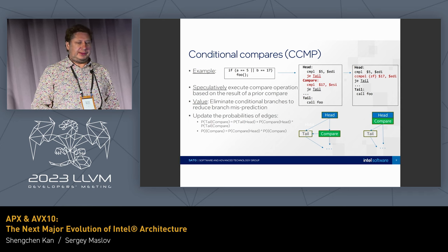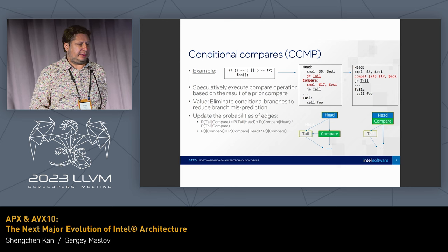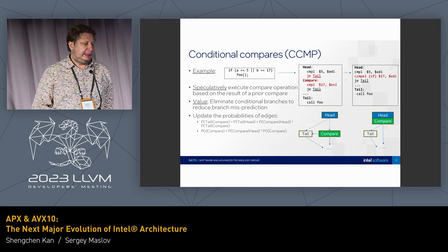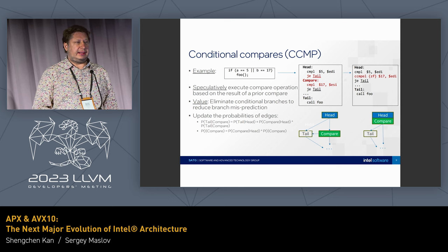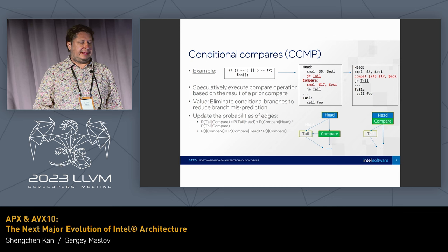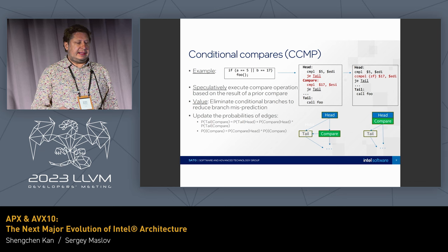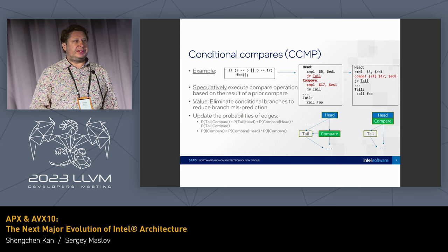When you have cascaded if-then-if operations — for example, checking one value and then checking another — instead of doing control flow with jumps that might be mispredicted, we are creating an instruction that executes a compare conditionally. Based on the condition from the previous compare, you can now execute a compare under that condition. This follows the existing CMOV idea of speculative execution, and this conditional execution simplifies control flow, reducing pressure on the branch prediction unit.